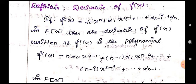First we see the definition of derivative of f(x). If f(x) = α₀xⁿ + α₁xⁿ⁻¹ + ... + αₙ₋₁x + αₙ in F[x], a ring of polynomials, then the derivative of f(x), written as f'(x), is the polynomial f'(x) = nα₀xⁿ⁻¹ + (n-1)α₁xⁿ⁻² + ... + (n-i)αᵢxⁿ⁻ⁱ⁻¹ + ... + αₙ₋₁ in F[x].